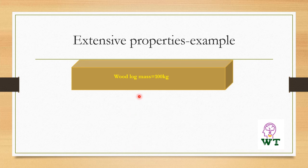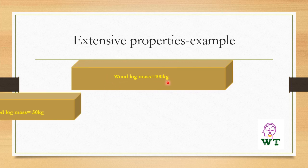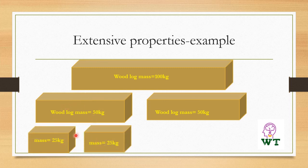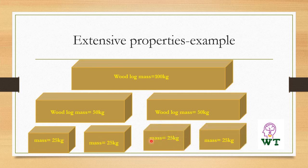Another example is a wooden log. Consider a wooden log which has a mass of 100 kilograms. If we cut it into two equal halves, the mass is reduced to 50 kg each. If we further cut into pieces, this 50 kilograms is further reduced to 25 kg each. That means mass is the property which depends upon the amount of the substance.